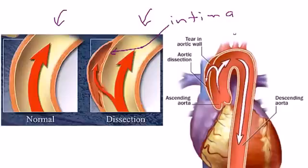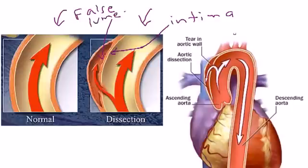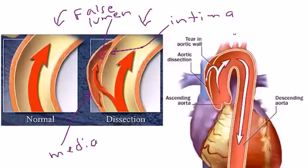The blood then flows into this part, which is a false lumen that's created because of that tear. When that happens, the blood starts to accumulate between the intima and this layer, which is known as the media. So that's really what a dissection is.